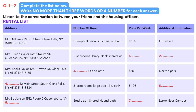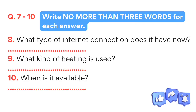Your friend decides that he would like to talk to Mr Bo Jensen. Look at questions seven to nine. Answer questions seven to nine. Write no more than three words for each answer.